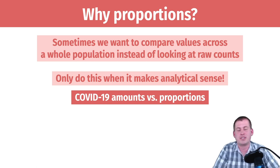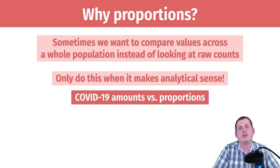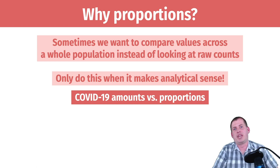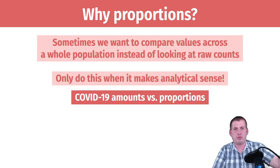If it makes sense to not show something as proportional, then don't do it — like with these COVID numbers. The Financial Times was wise not to show per capita numbers. Other organizations have, sometimes caving to public outcry to bring down the numbers.